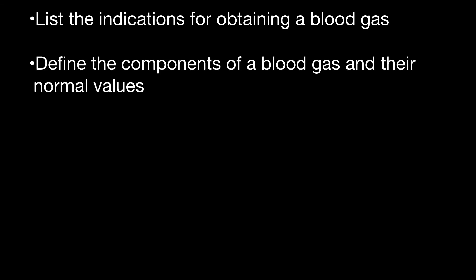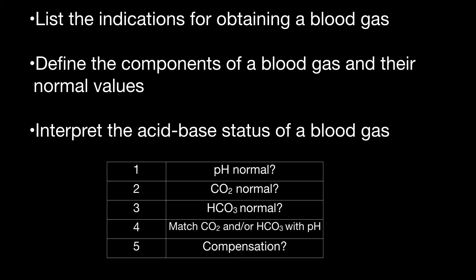To sum up, we've listed the indications for obtaining a blood gas. We've defined the components of blood gas and their normal values. We've interpreted the acid-base status of a blood gas using the five-step approach. Now, we're going to continue by practicing questions. All these practice questions are looking at the acid-base status of a blood gas. And at the end, then we'll revisit step six, assessing the P little aO2 of a blood gas.